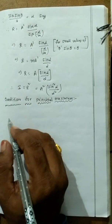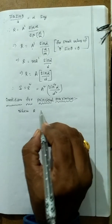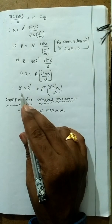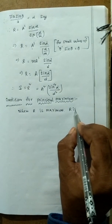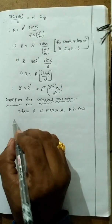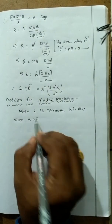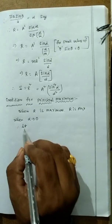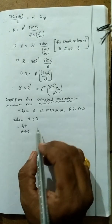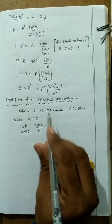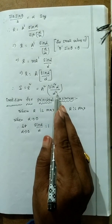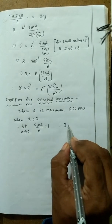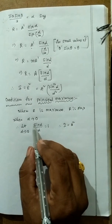Maximum intensity occurs when R is maximum, which happens when α → 0. Applying the limit: lim(α→0) sin α / α = 1. Therefore, I = A² × 1 = A². So maximum intensity I = A² when α = 0.